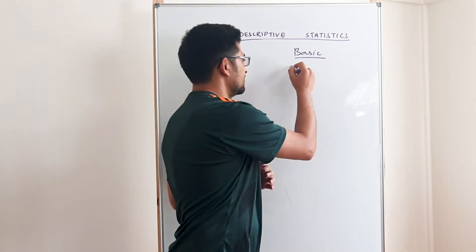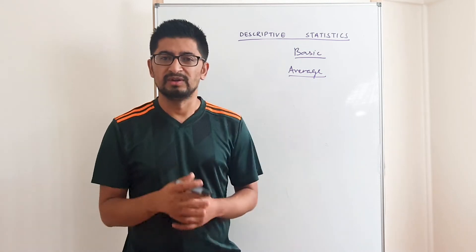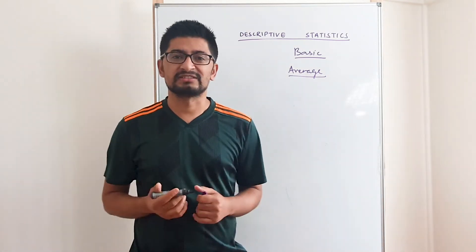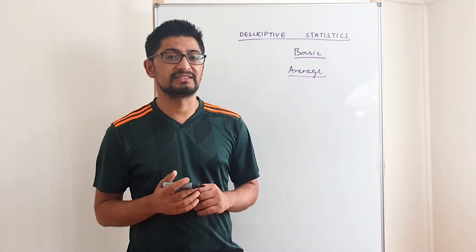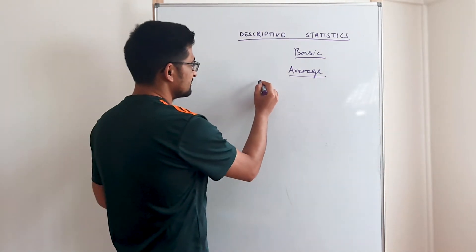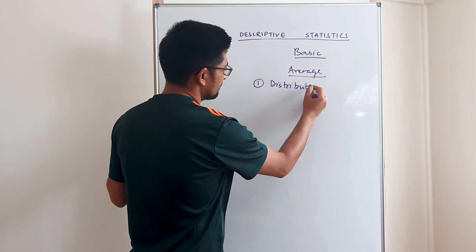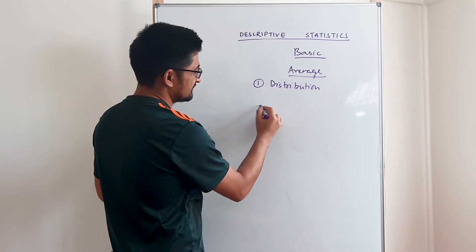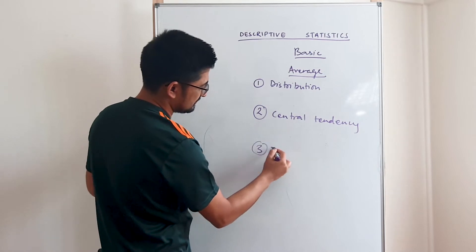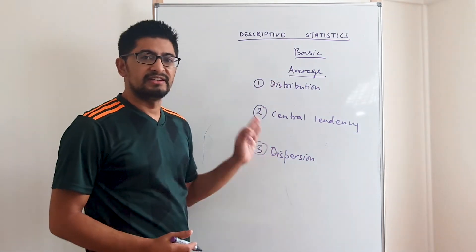For example, average — average earning. What is the average height of a classroom? What is the average income of a particular city? Those are the basic features of the data and those are called descriptive statistics. When we talk about descriptive statistics, we need to understand three things: distribution of the data, central tendency, and dispersion.